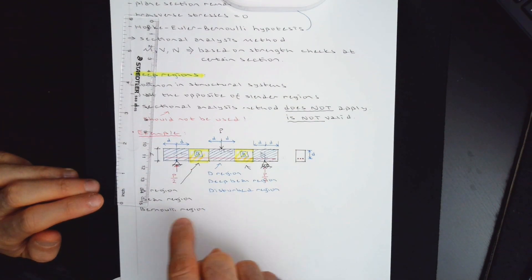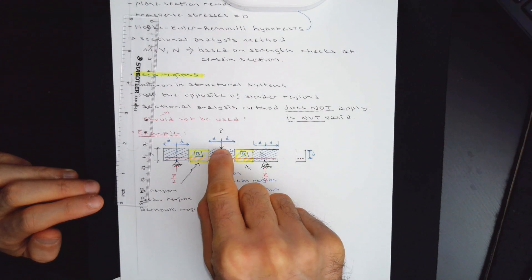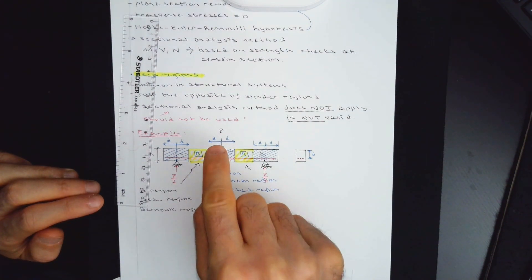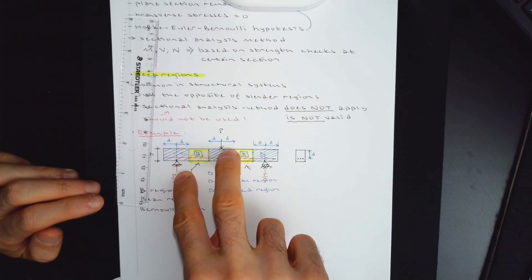So that's the logic behind checking everything at a certain distance, which is approximately d away from the disturbances. This is called disturbed region because you are disturbing the beam by a local effect, which could be a point load, which could be a support reaction, which are essentially the same effect. You are introducing compression into the member.